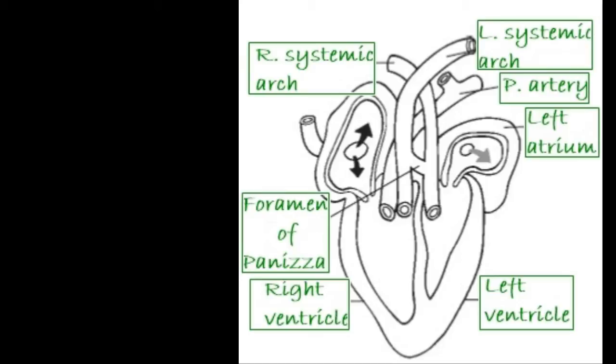This one is right systemic arch. This right systemic arch arises from the left ventricle. And from the right ventricle, this left systemic arch and pulmonary artery arise.